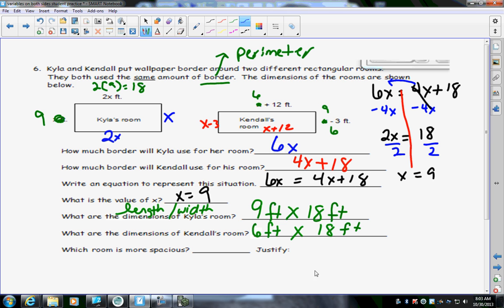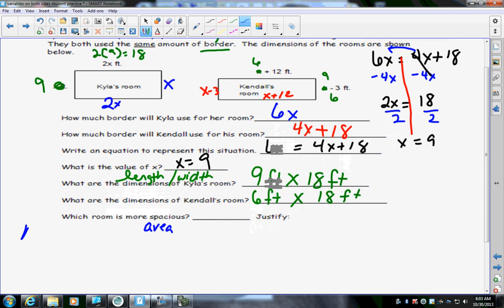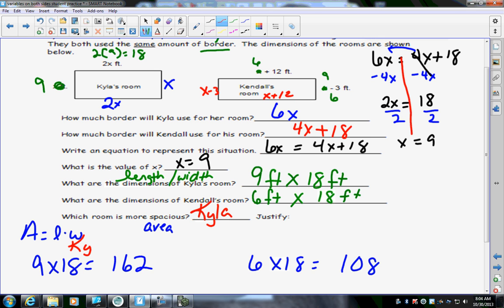Now, it asks, which room is more spacious? Spacious, biggest, wider. I need to know the area. So, for Kyla, her area, remember, is length times width. So, I would have 9 times 18. And Kendall is 6 times 18. What's 9 times 18? I'm sorry, 162? And what's Kendall's? 108. Whose room is bigger? Kyla's is bigger. And when it says justify, what I wrote showing the area, like if this was a test, showing this right here would show me that you knew which one was bigger because you found the area.